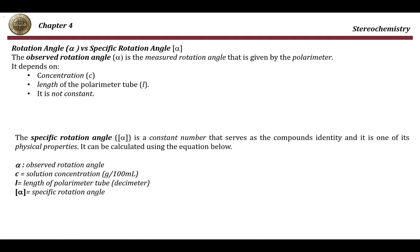Now let's discuss the rotation angle alpha versus the specific rotation angle. The observed rotation angle alpha is the rotation angle measured by the polarimeter. When you place a sample in the polarimeter, the screen shows a certain number — for example 13, 14, 50, 60, 80, or 90. This number depends on the concentration of the solution and the length of the polarimeter tube, so it is not a constant number.